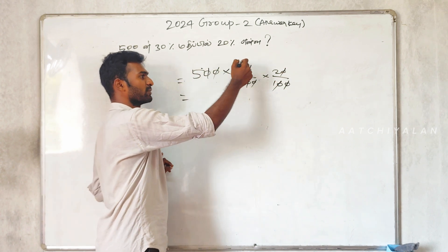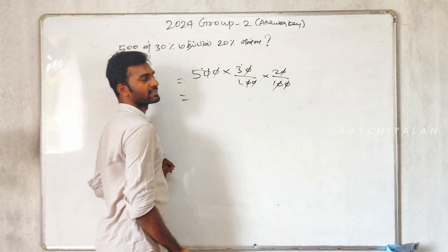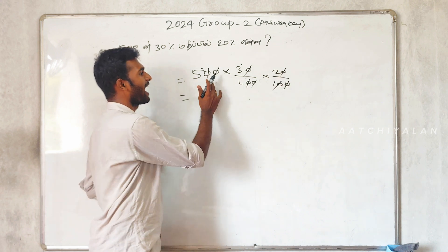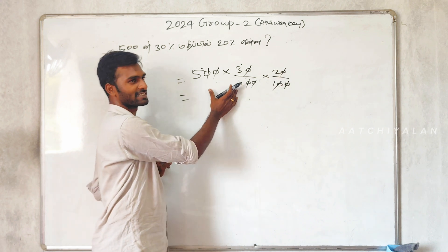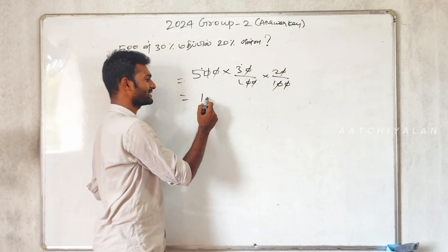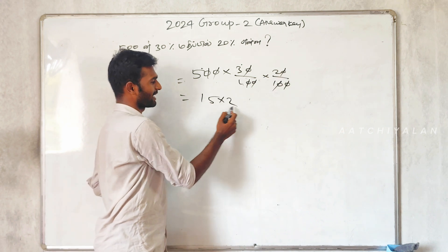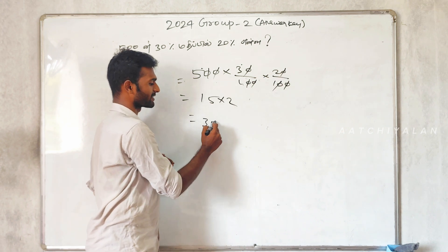So 5 into 3 into 2. That is 5, 3, 15, 15, 15, times 2. The answer is 30.